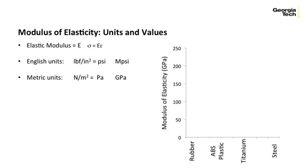In terms of units and values, in this course we're going to use capital E as our notation for the elastic modulus. In English units, the units are psi, and most metals are in the mega-psi range. In metric units, the units are pascals, and most metals have a modulus of elasticity in the gigapascal range.